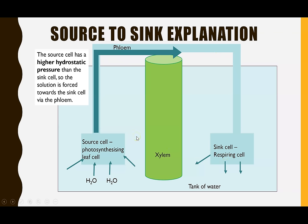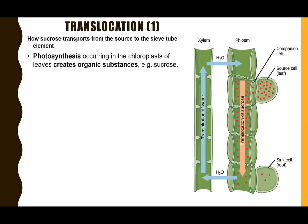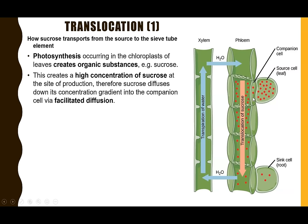That's the model of mass flow hypothesis — moving from the source cell to the sink cell. Now we'll add in the actual details: the role of the companion cell, the sieve tube element, and the xylem in translocation. Step one starts at the source, where sucrose is created in photosynthesis in the leaves. Once created, those organic substances such as sucrose get transported into the companion cell by facilitated diffusion — moving from high concentration where sucrose is created to a lower concentration in the companion cell, via a carrier or channel protein.